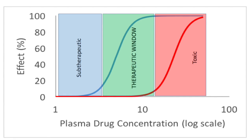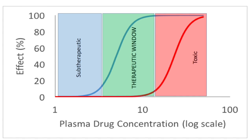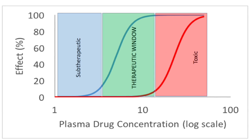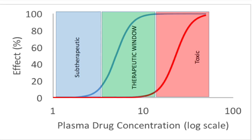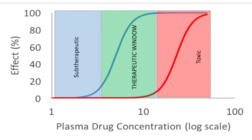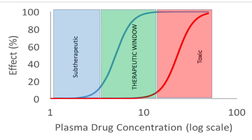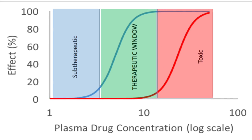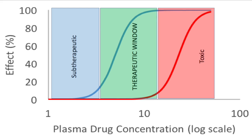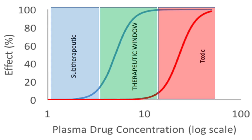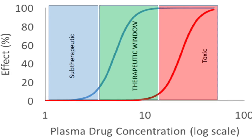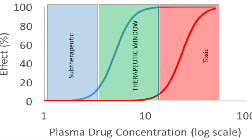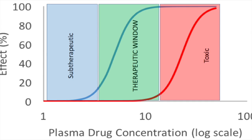Which brings us to the concept of the therapeutic window, or the range of plasma drug concentrations that are associated with beneficial effects in a patient. Outside this range, there are concentrations that are too low to have an effect and are therefore considered to be sub-therapeutic, whereas concentrations can also be too high and cause harmful effects and are therefore referred to as being toxic.